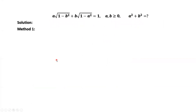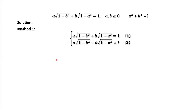Method 1. The first equation is the given equation. The second equation is similar to the given equation, but with a minus sign. We define the left-hand side equal to a variable t. So we have two equations.